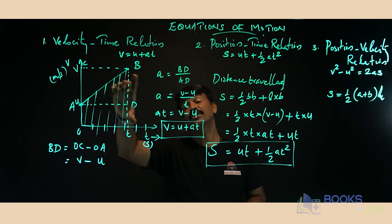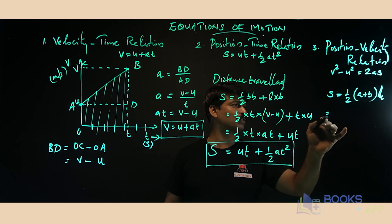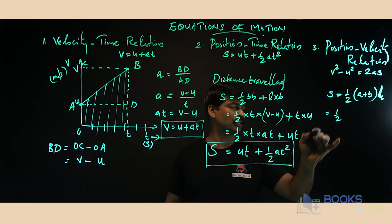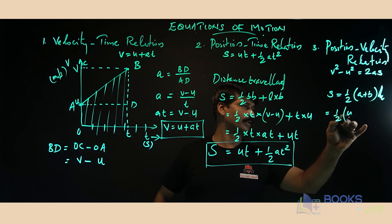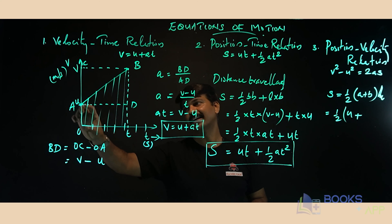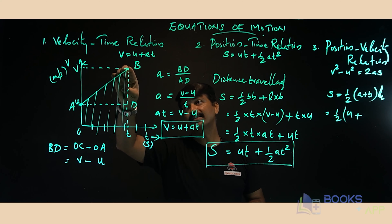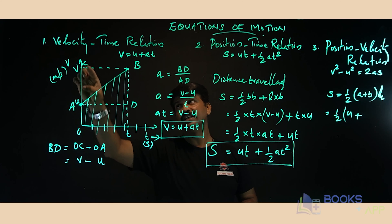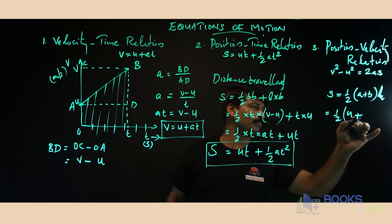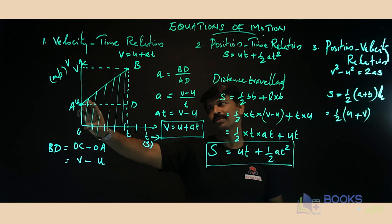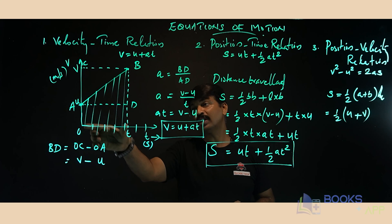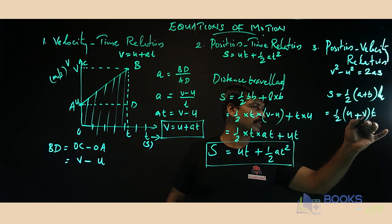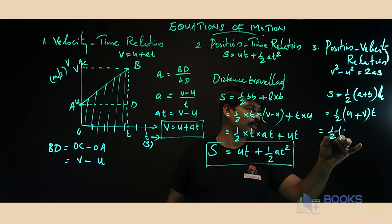The area of a trapezium is ½ × (a + b) × h, where a and b are the two parallel sides and h is the height (the distance between the parallel sides). Here, one parallel side is OA which equals u, the other parallel side is OC which equals v, and the height of the trapezium is t.